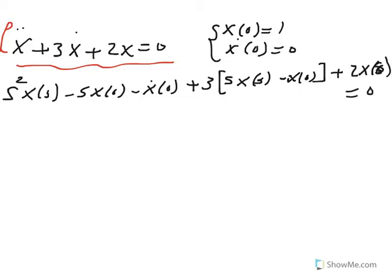Let me clean this up. Now keep in mind that this guy is equal to one, this guy is equal to zero for initial velocity, and this guy is equal to one.